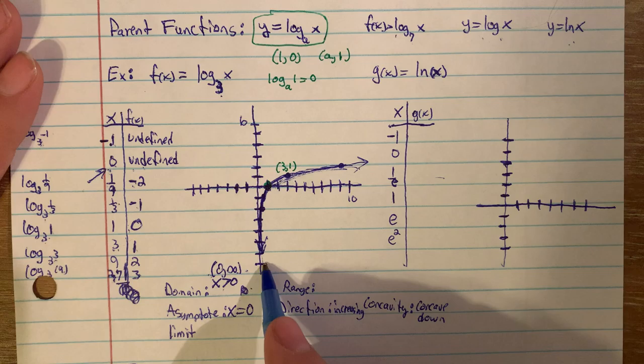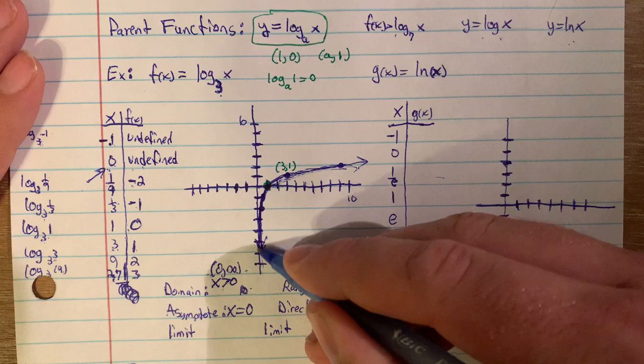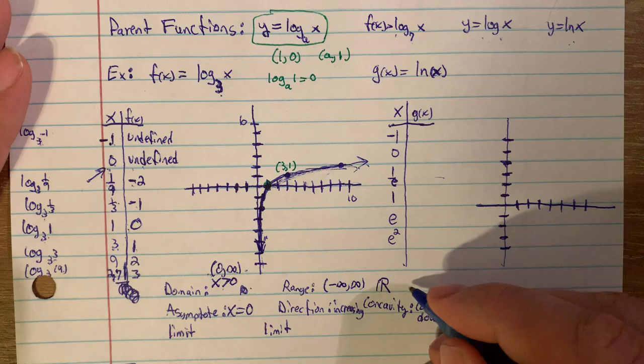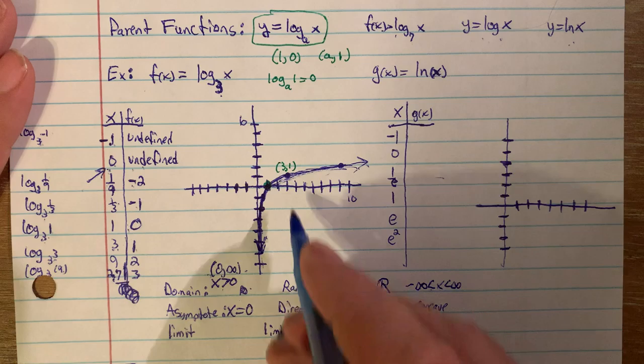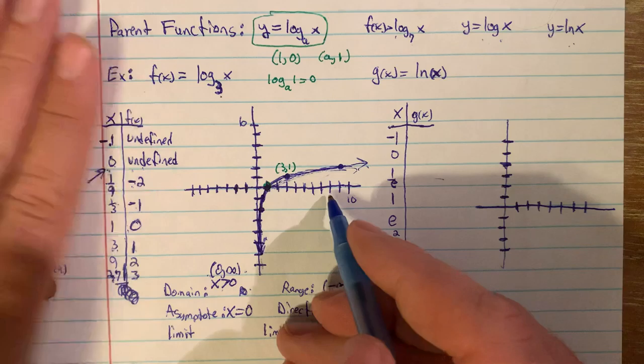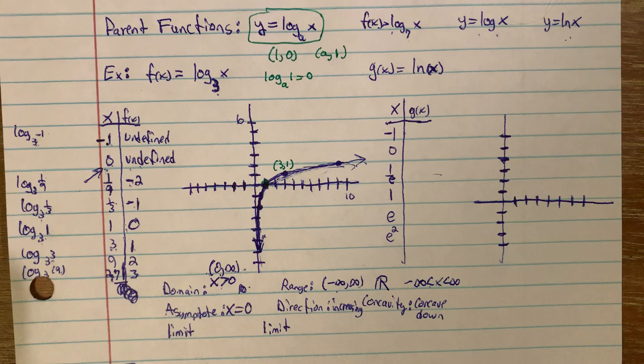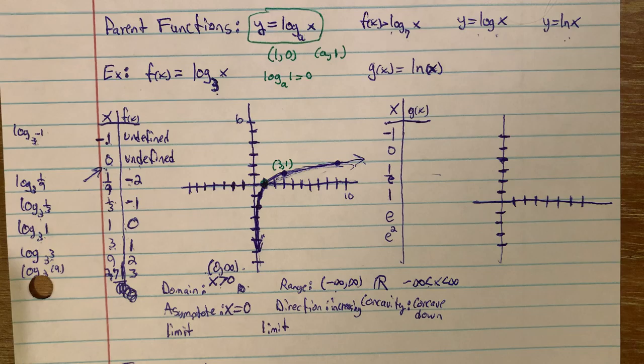This creates an interesting shape where there is a vertical asymptote at x = 0. Log is undefined at x = 0 and all negative numbers, so there won't be any graph values there. As you get really close to 0, you always end up with negative y values. The domain of this function is x greater than 0, or (0, ∞). The range is all real numbers — it keeps going down and up forever — from negative infinity to infinity.